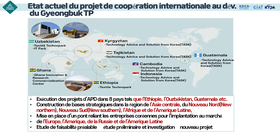Si vous regardez l'Ouzbékistan, nous travaillons ensemble pour construire un textile Technopark ainsi qu'un parc de Tiaï. En Afrique, les projets du textile Technopark éthiopien et du Centre d'innovation technique du Ghana sont en cours de construction. Au Kyrgyzstan et au Tadjikistan en Asie centrale, nous menons une activité de consultation en technologie pour promouvoir les entreprises locales.